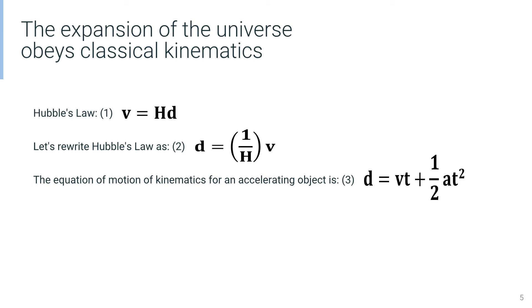Now that we have isolated distance to one side, we can compare this new equation to the classical equation of motion of an accelerating object, represented by equation 3. Equations 2 and 3 give us the foundation on which to extend Hubble's Law.